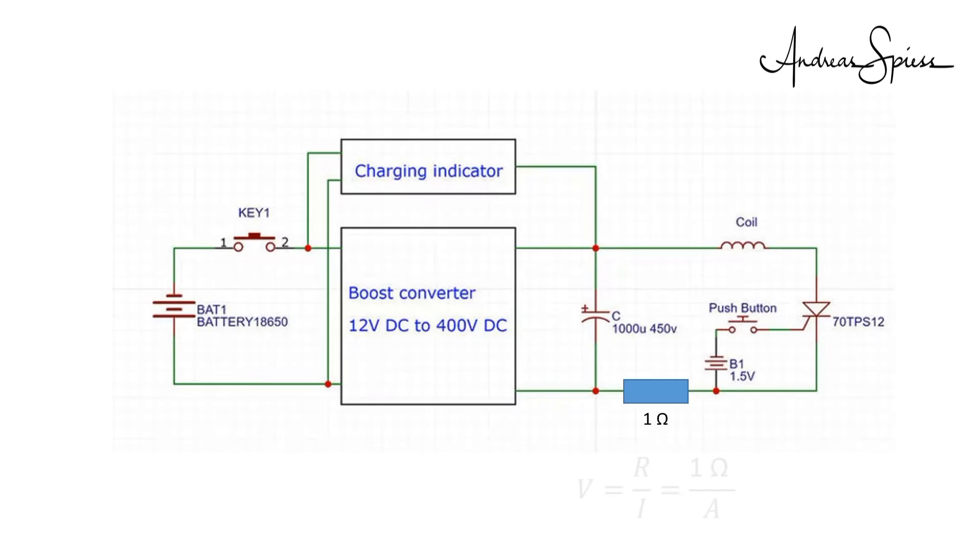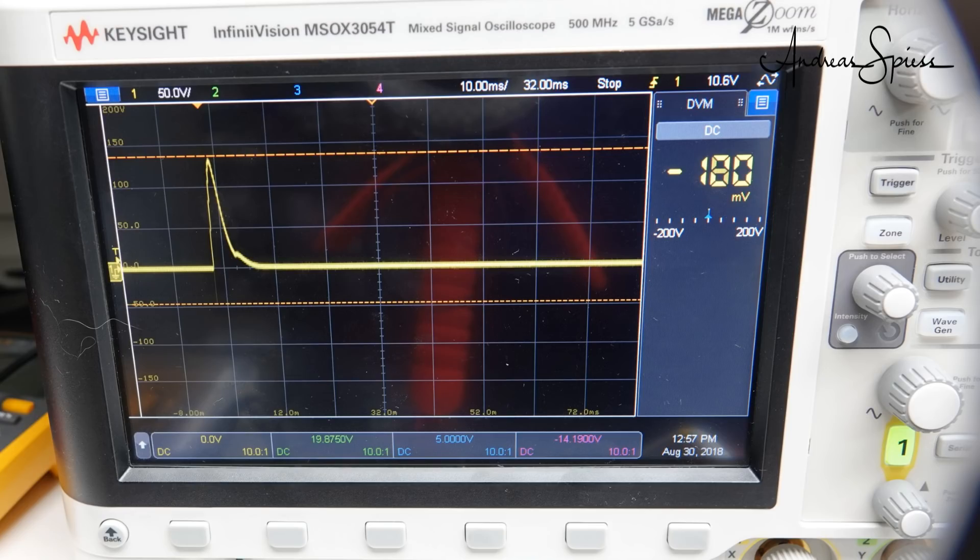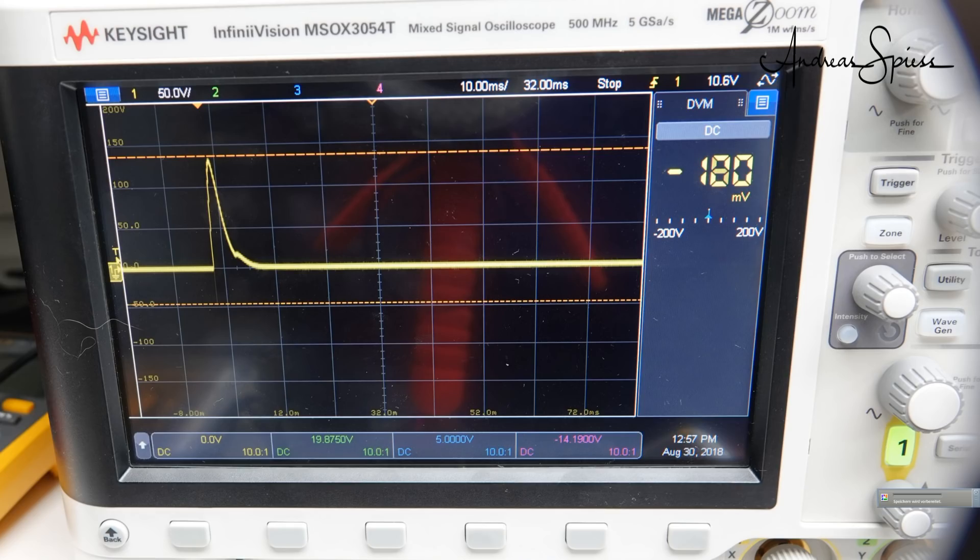According to Ohm's law, this resistor, also called shunt resistor, shows 1 volt per ampere. And because the action is so fast, I had to use the oscilloscope to see what happened. Here we see that about 130 amperes circulated through the coil, and the whole thing just took a few milliseconds. Cool! What limited this current?